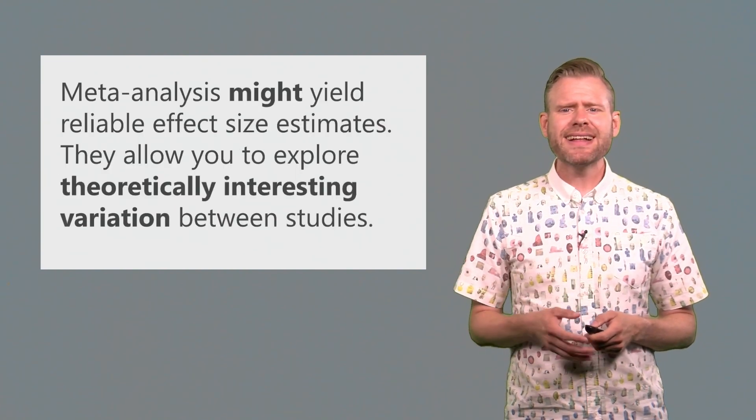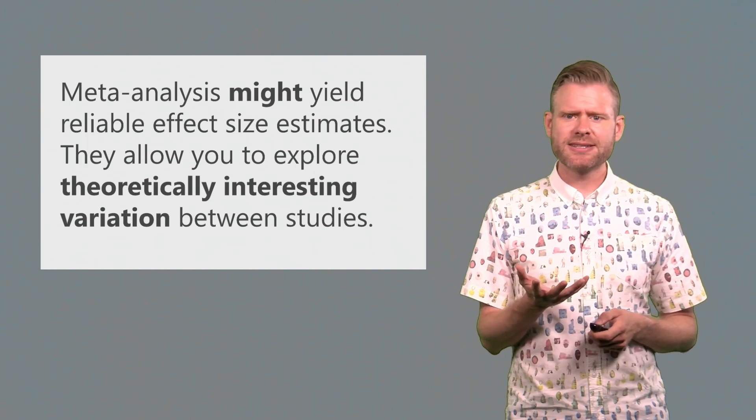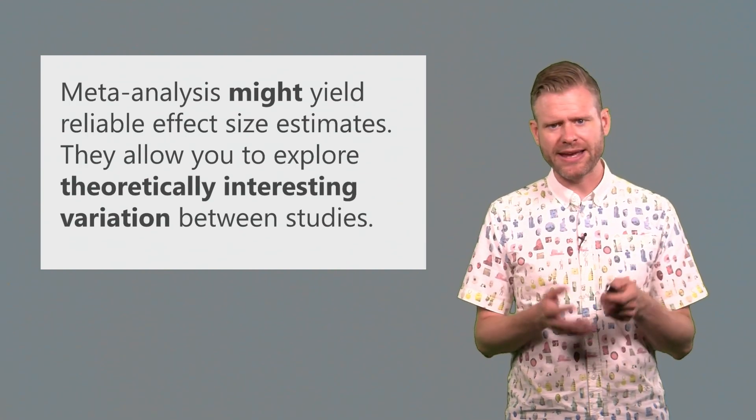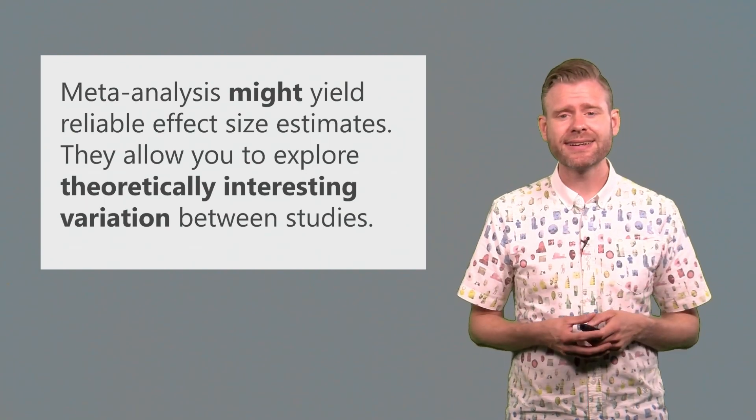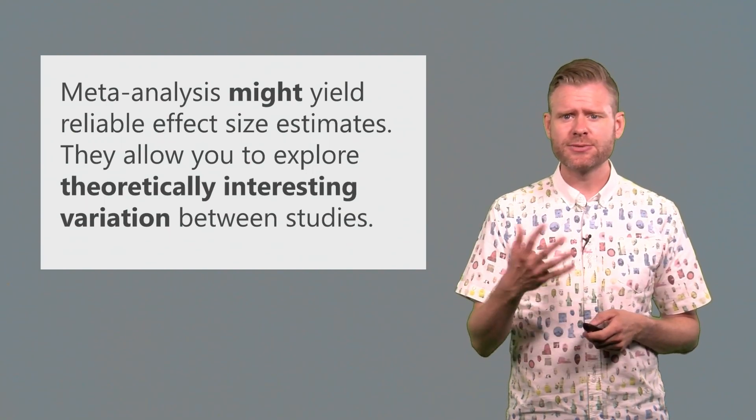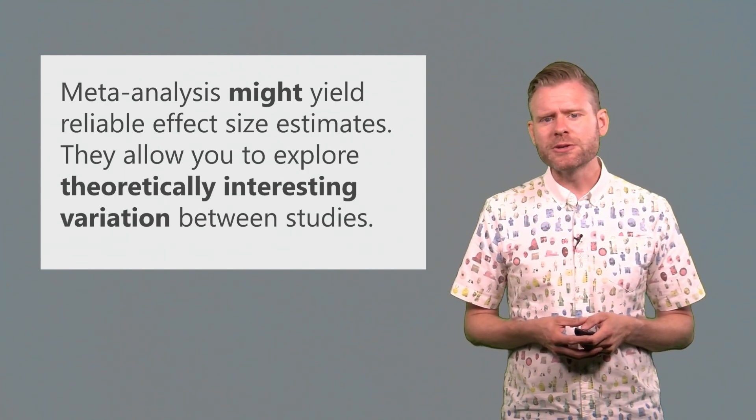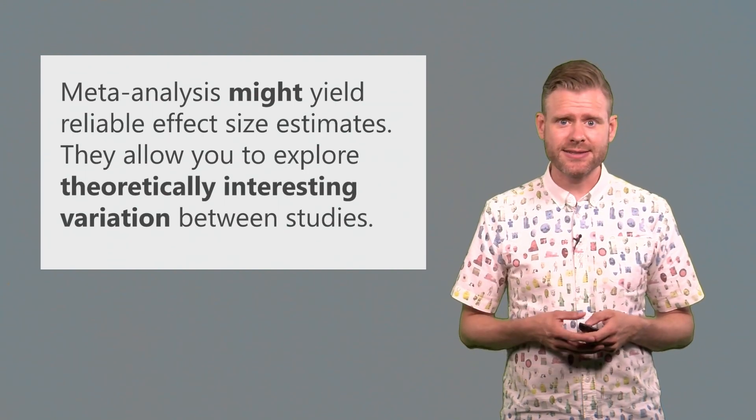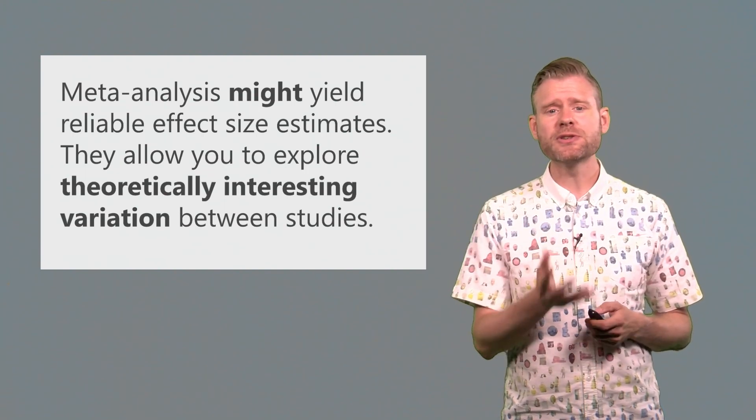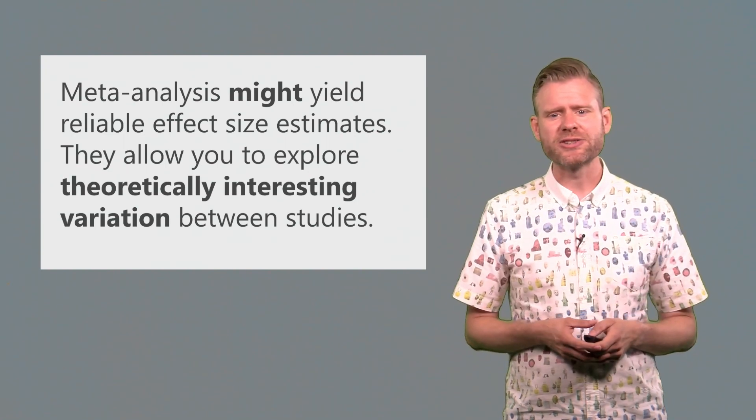A meta-analysis might be able to yield reliable effect size estimates. This is clearly true in a prospective meta-analysis, but it is more problematic if you perform a meta-analysis on the published literature, as we'll see in the next lecture. More importantly, they allow you to explore theoretically interesting variation between studies, and this is a very good way to use meta-analysis, especially if you're starting on a new research line.